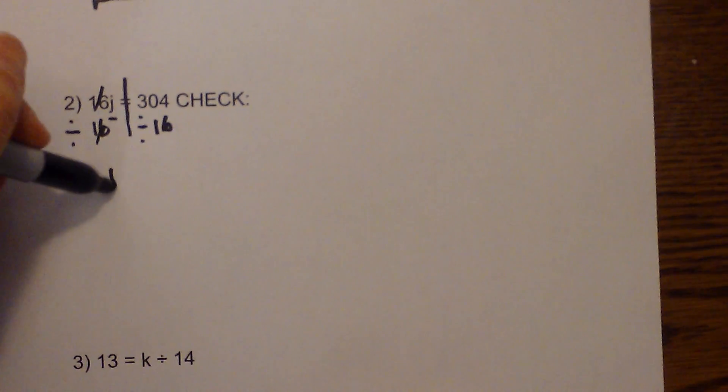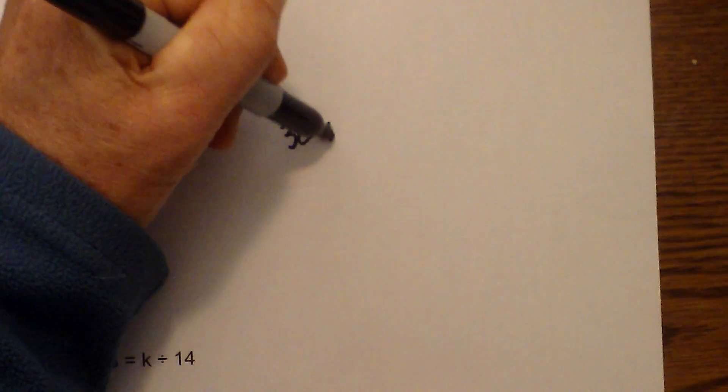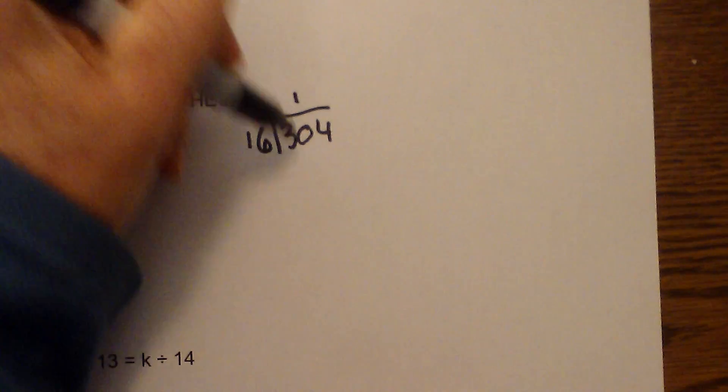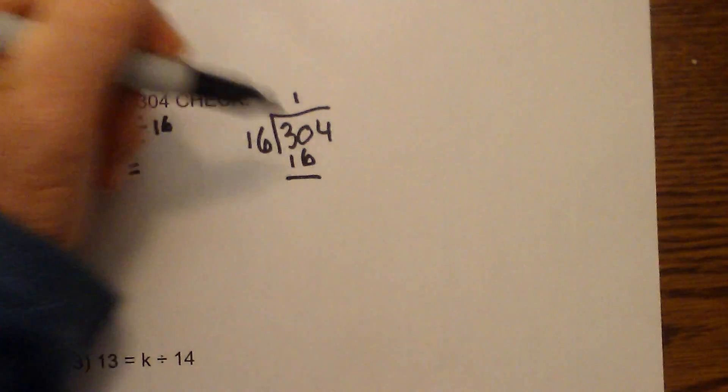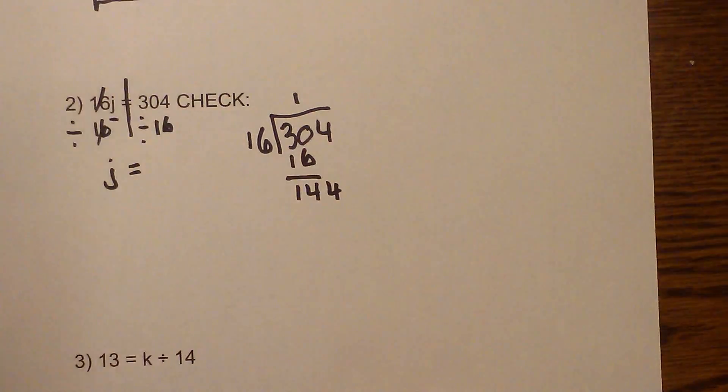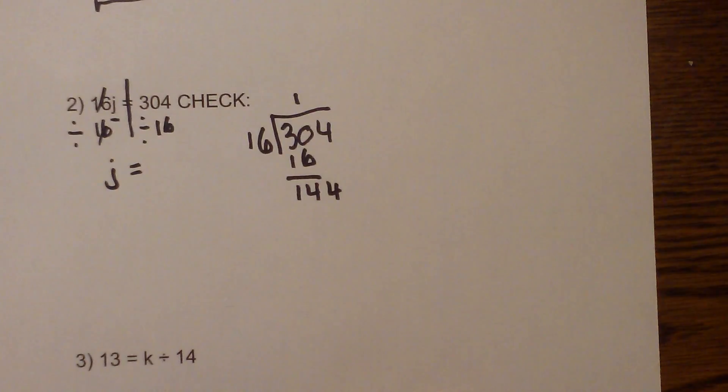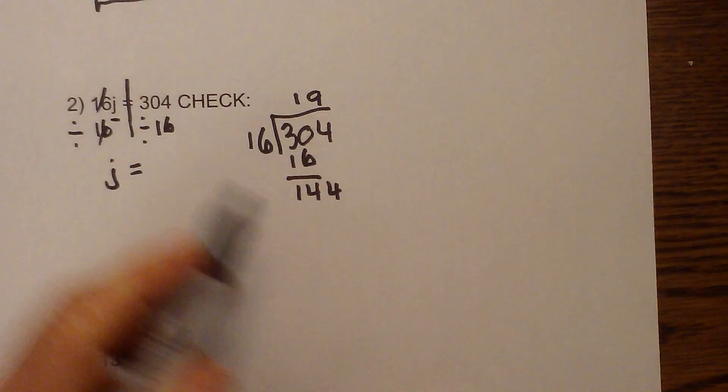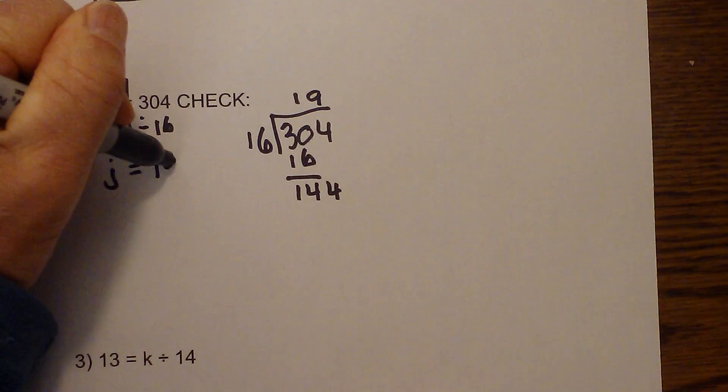The 16s cancel so I'm left with j equals, and now let's move this over here and I'll divide 304 by 16. 16 goes into 31 once. Okay, 30 minus 16 is 14, and 144 divided by 16 is 9. So we have j is equal to 19.